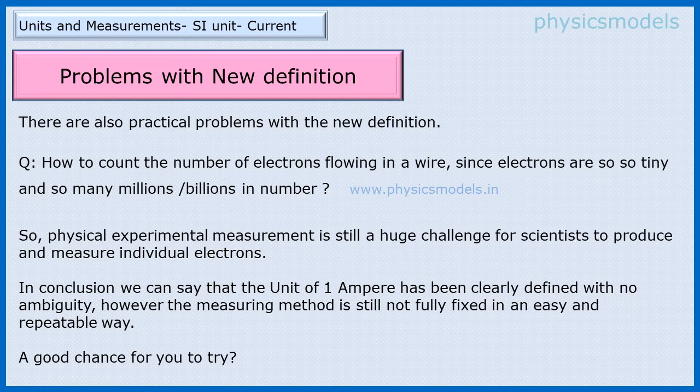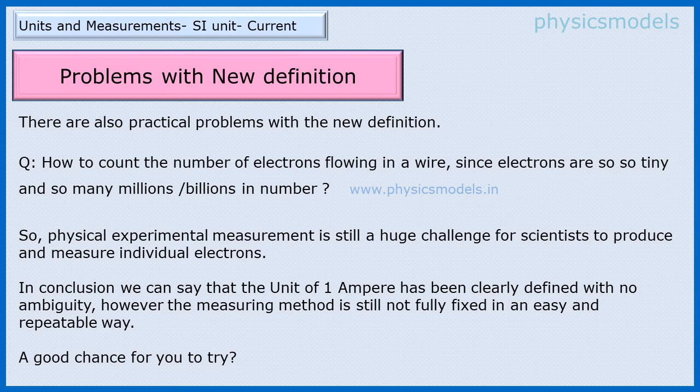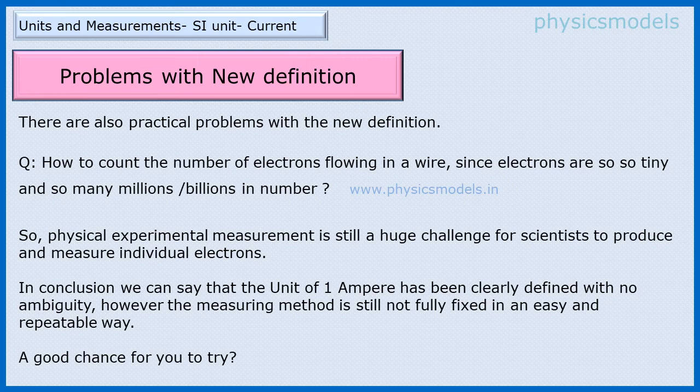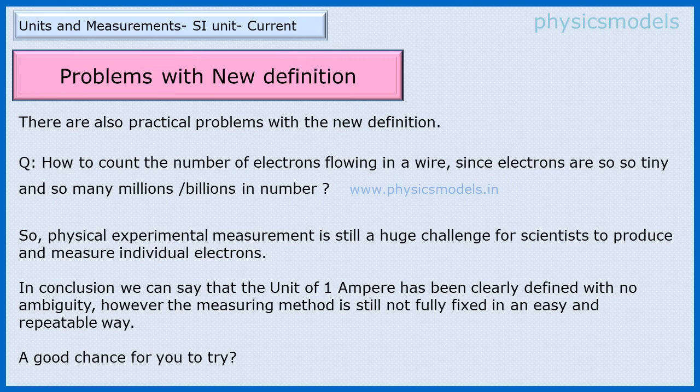Even with this new definition, scientists pointed out some practical problems. For example, they said how do we count the number of electrons flowing in a wire, since electrons are so tiny and millions and billions of them have to flow to create that one Coulomb flowing per second. Therefore the physical measurement is still a huge challenge and it's not fully sorted. The definition is beautifully sorted but not the measurement. So in conclusion we can say that there is a scope for scientific inquiry and invention here, and maybe one of you will achieve that goal.